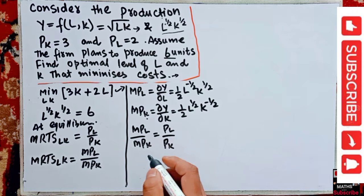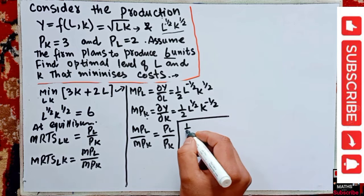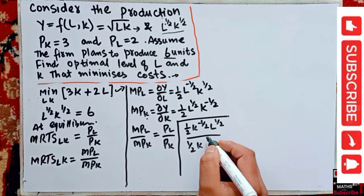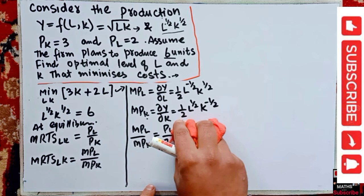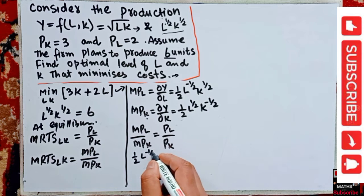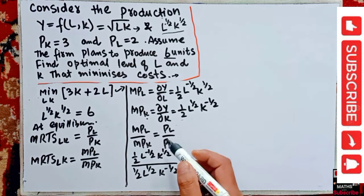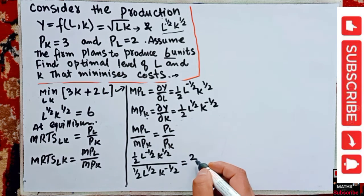So we can write: [(1/2) · L^(-1/2) · K^(1/2)] divided by [(1/2) · L^(1/2) · K^(-1/2)] = 2/3, where price of labor is two and price of capital is three.